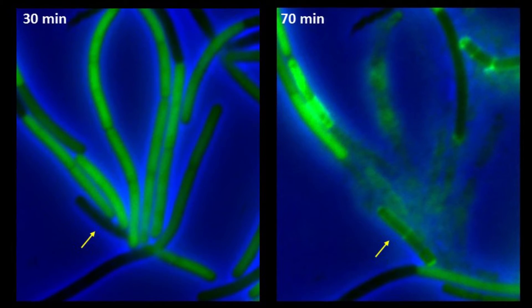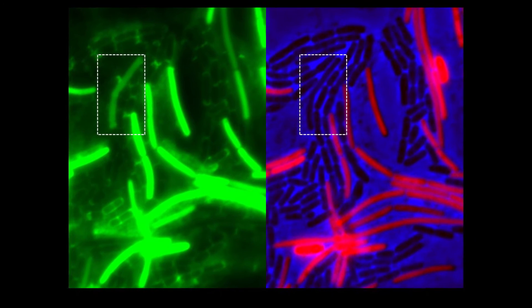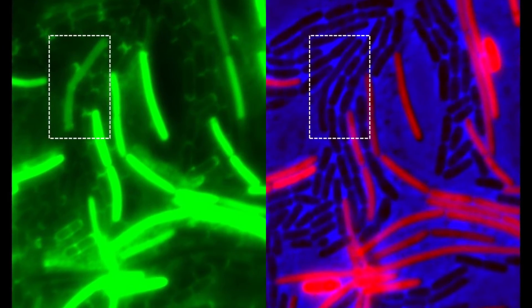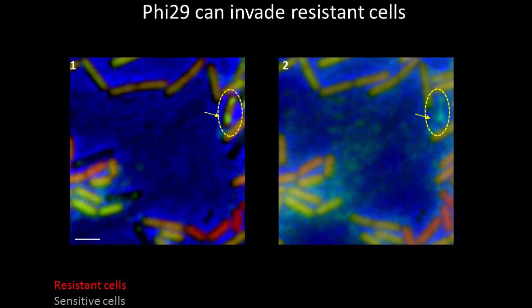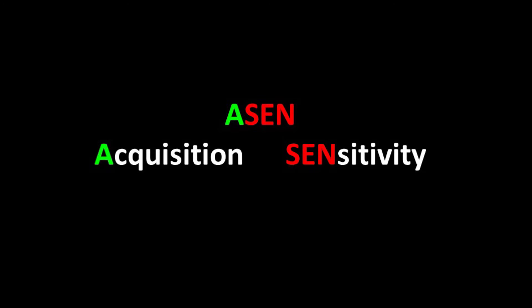Closer investigation of our data revealed that occasionally resistant cells were actually invaded by phages, only when they were incubated with sensitive cells. We termed this phenomenon of resistant cells infected by phages in mixed culture, ESSEN, for acquisition of sensitivity.